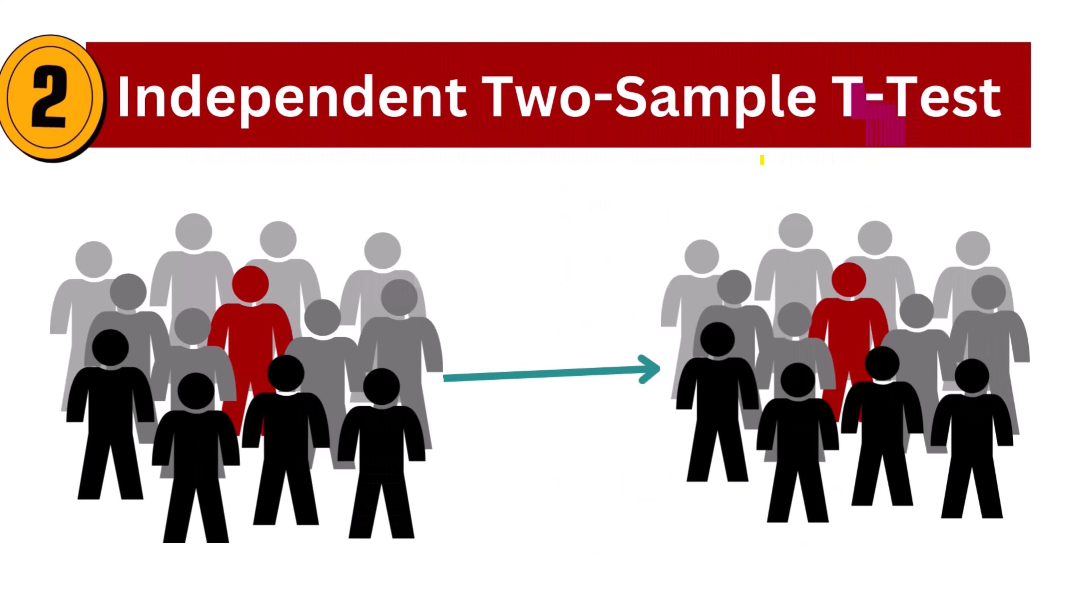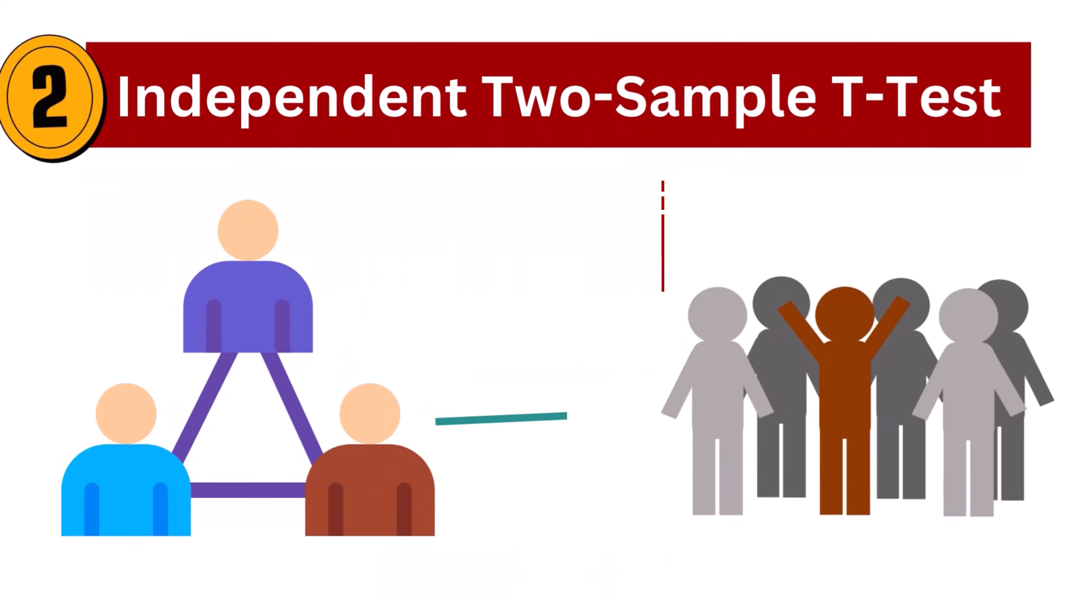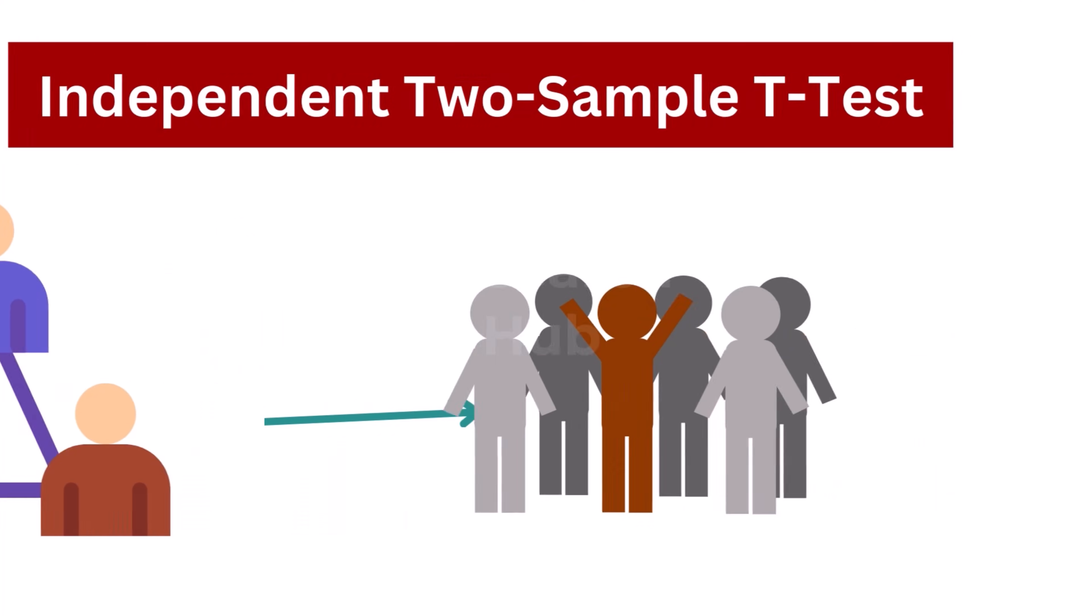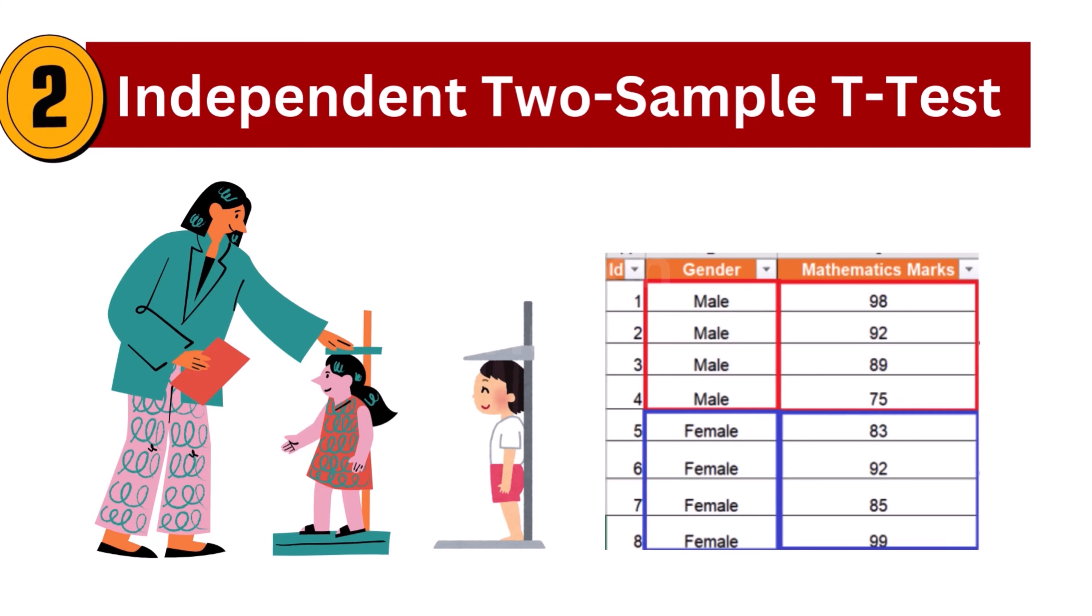2. Independent two-sample t-test. This is the test conducted when samples from two different groups, species, or populations are studied and compared. It is also known as an independent t-test. The two-sample t-test, also known as the independent samples t-test, is a method used to test whether the unknown population means of two groups are equal or not. For example, if a teacher wants to compare the height of male students and female students, she would use the independent two-sample test.